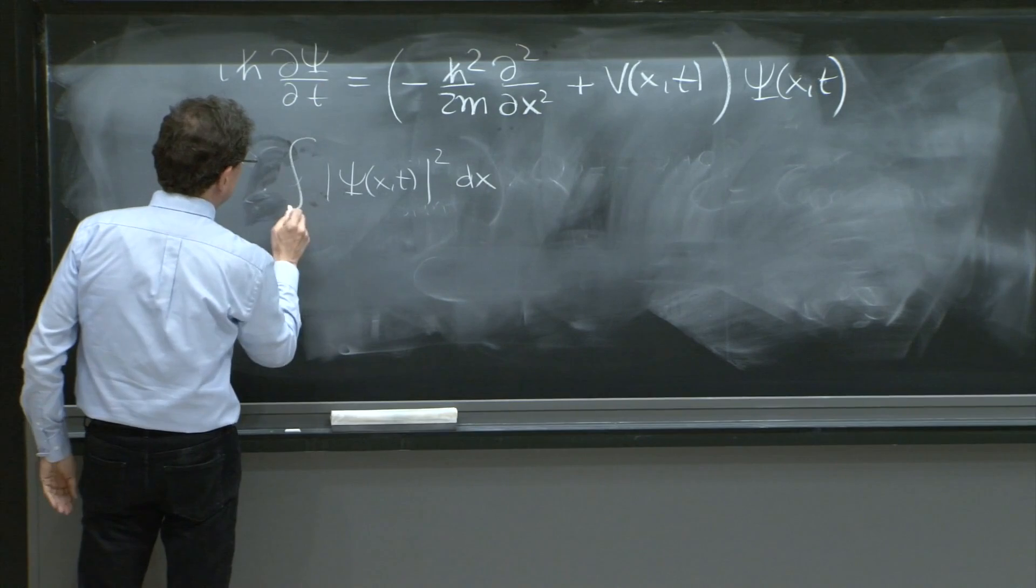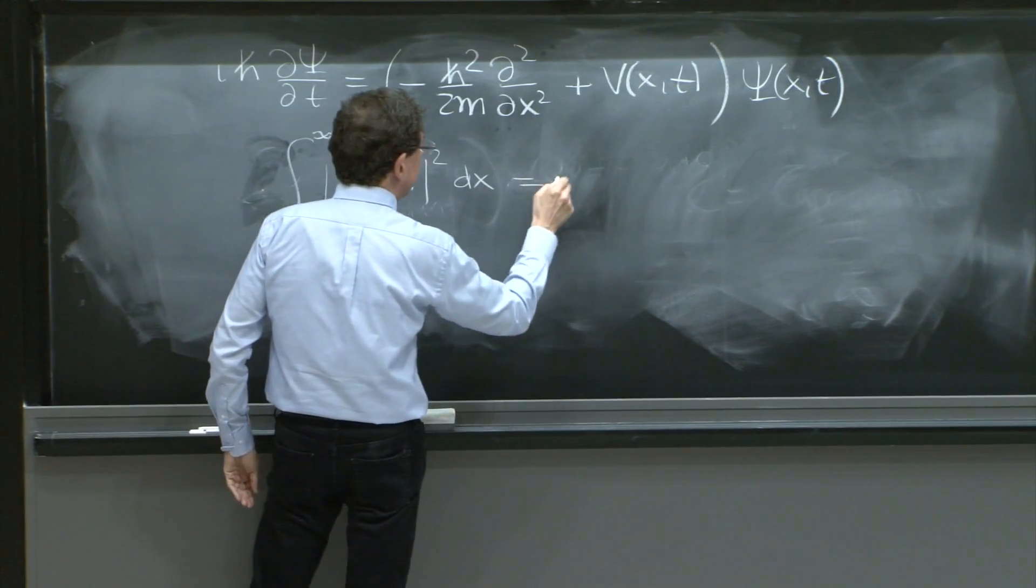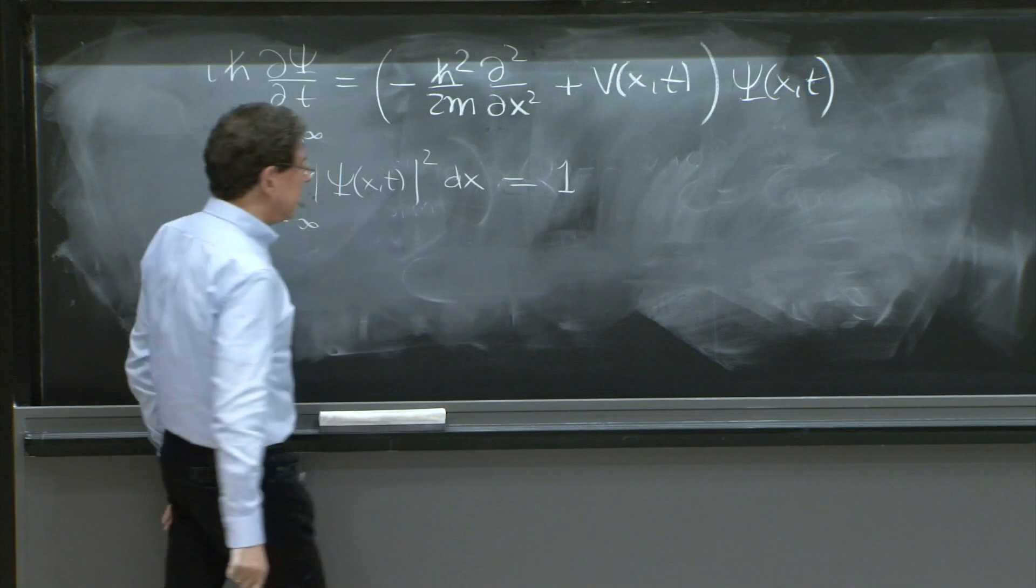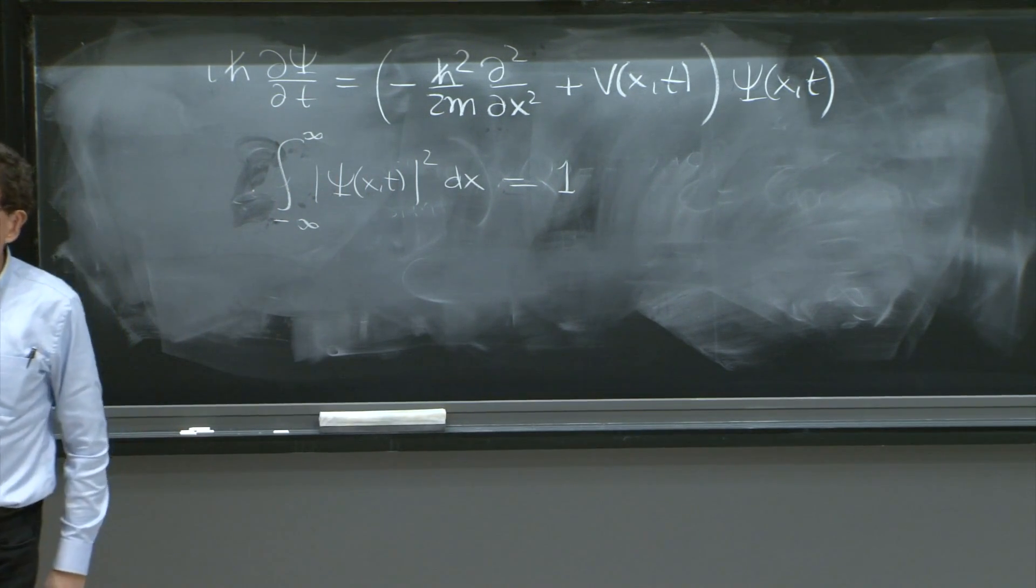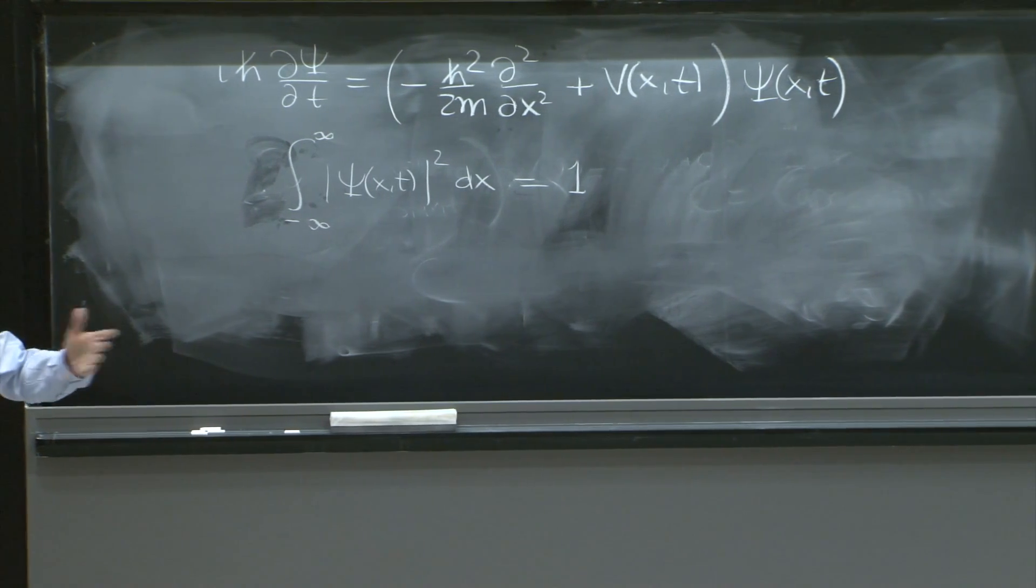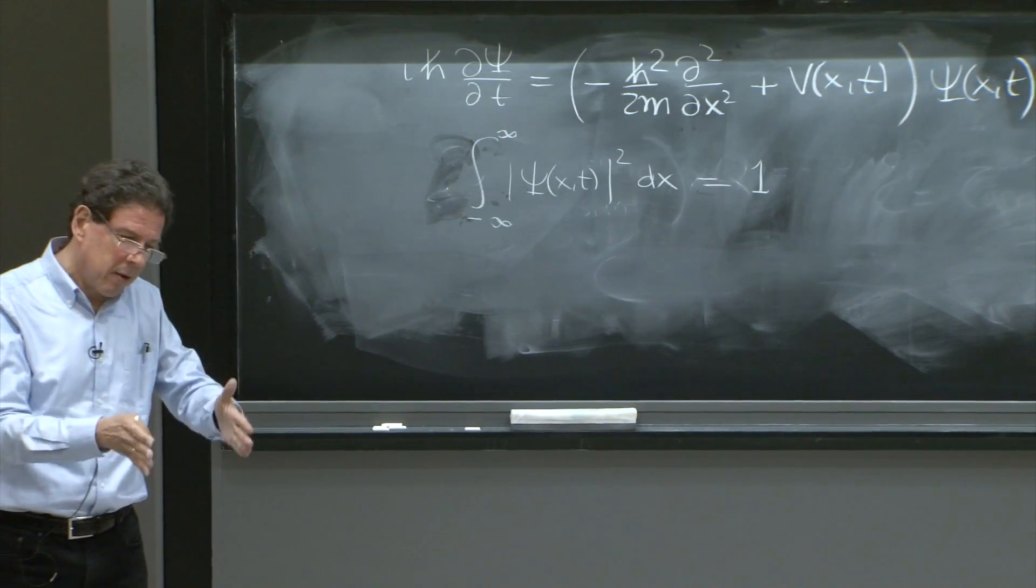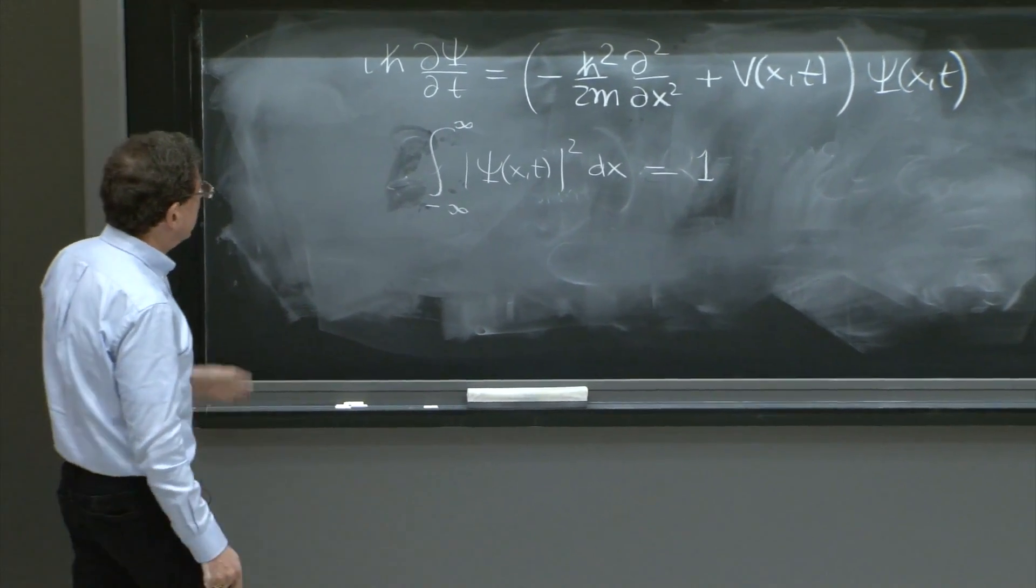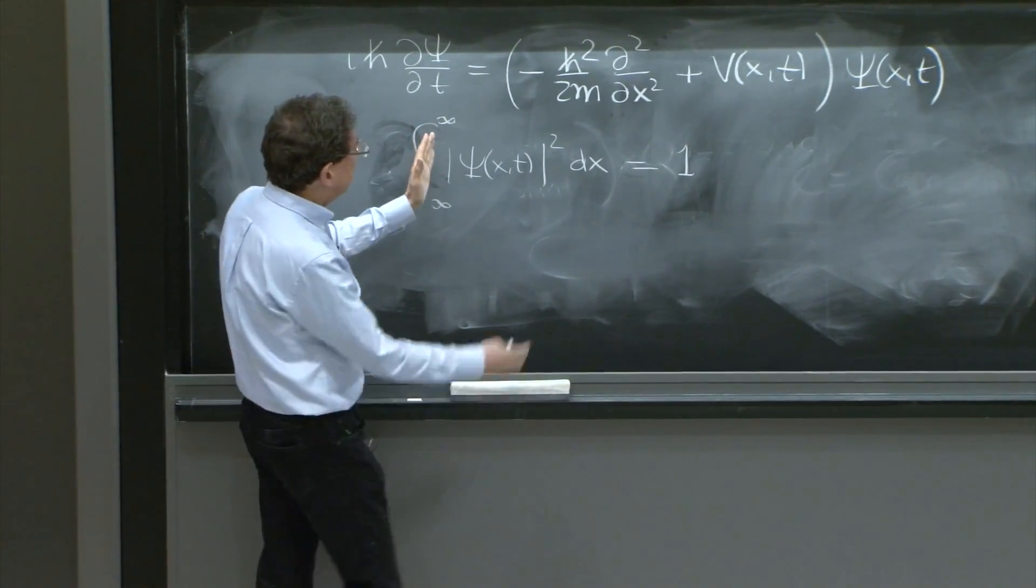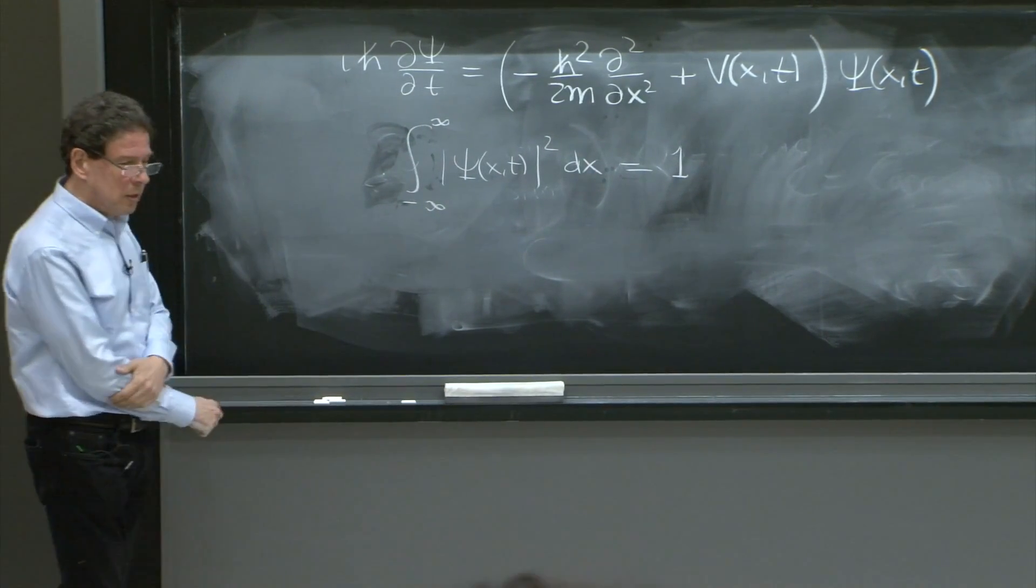This integral, if you integrate this all over space, must be 1 for the probability to make sense. So the total probability of finding the particle must be 1 - it must be somewhere. For this to be a probability distribution it has to be well normalized, which means 1.